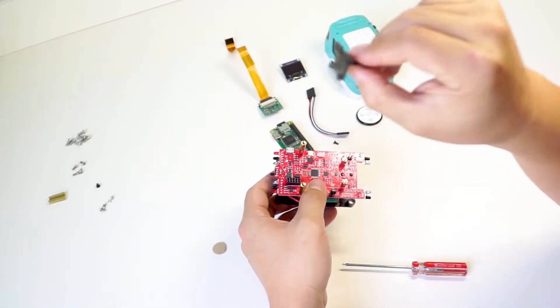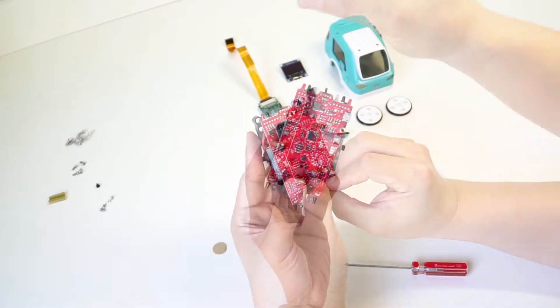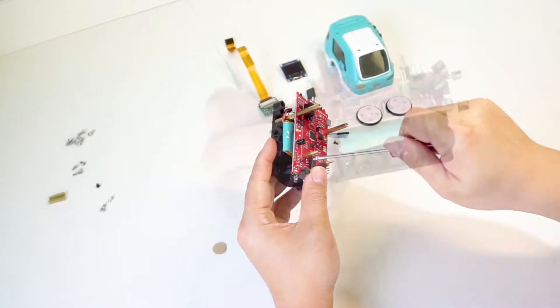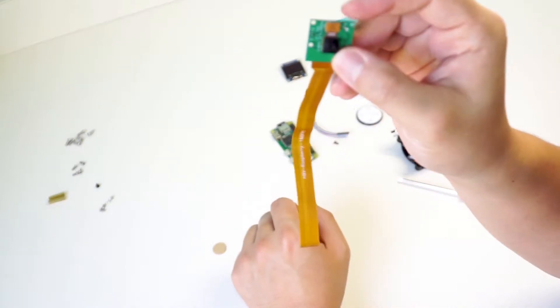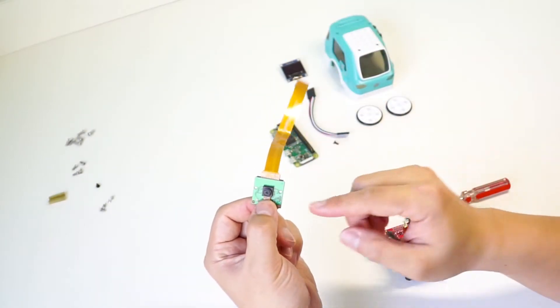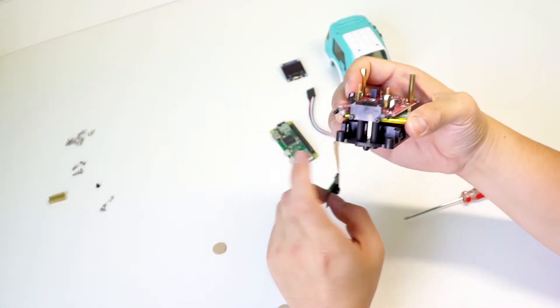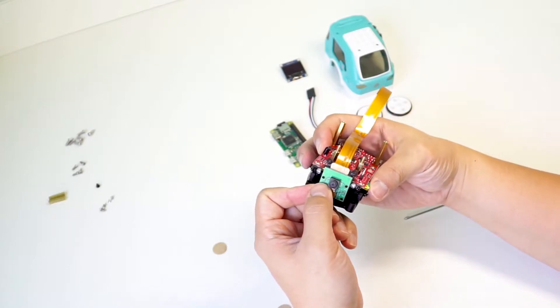Attach the mounting bracket to the Zumi board with a thick silver bolt. This bracket is going to hold the OLED screen and the Pi Cam, which we're going to attach next. Here's your Pi Cam. You're going to line up the middle two holes on the camera with the bottom two holes on the mounting bracket, making sure that the cable is on top and attach it with two mounting bolts.